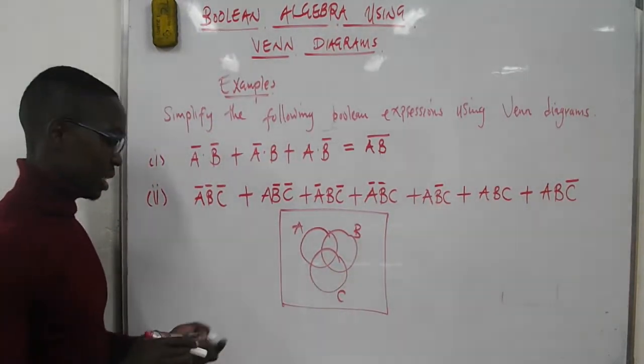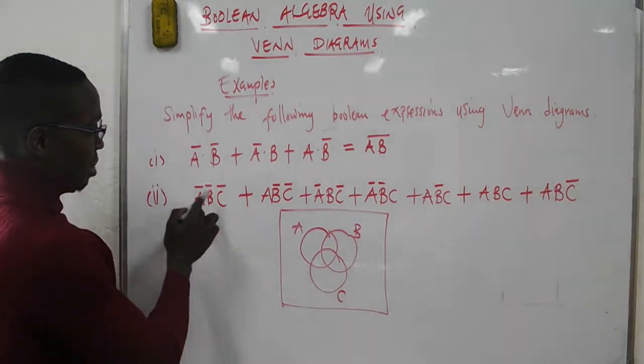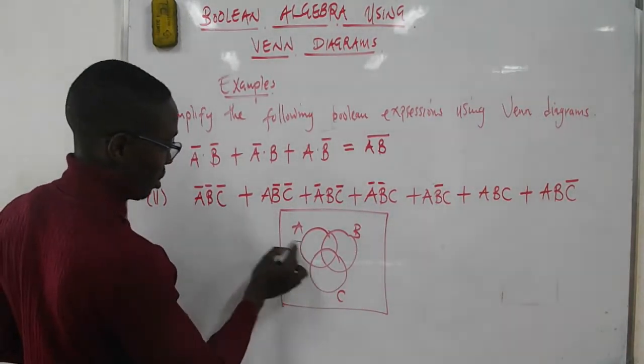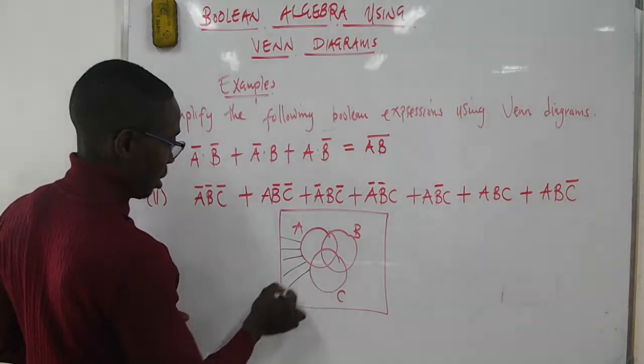When you start shading the given expressions, A̅B̅C̅ is everything outside the union of sets A, B, and C - the region outside ABC.